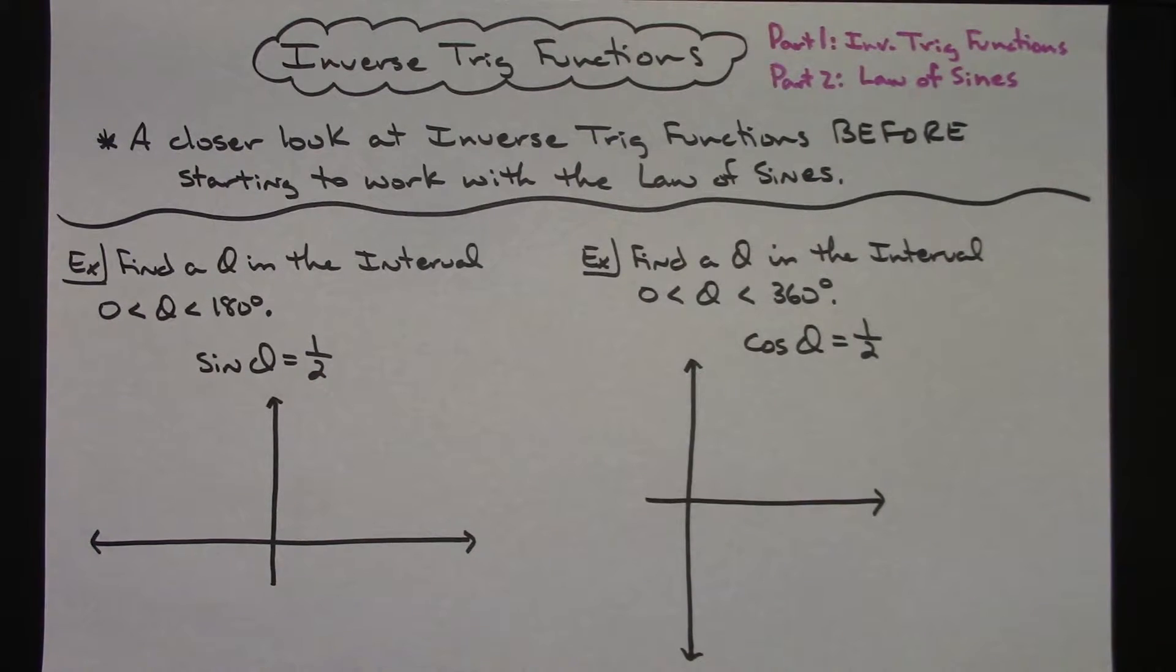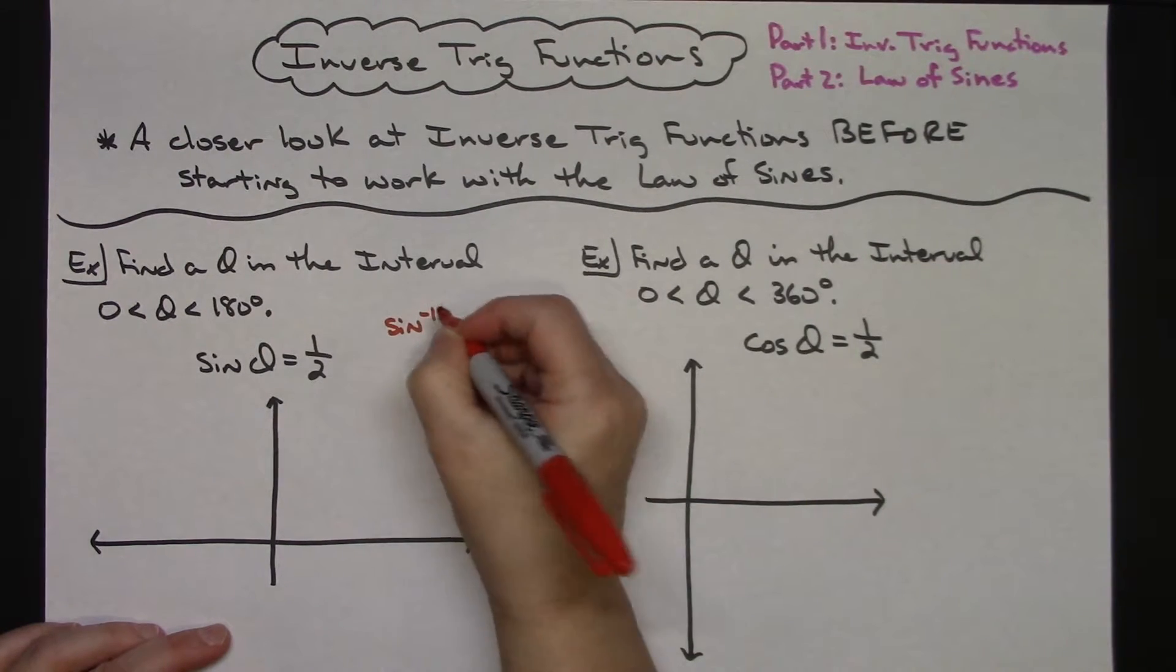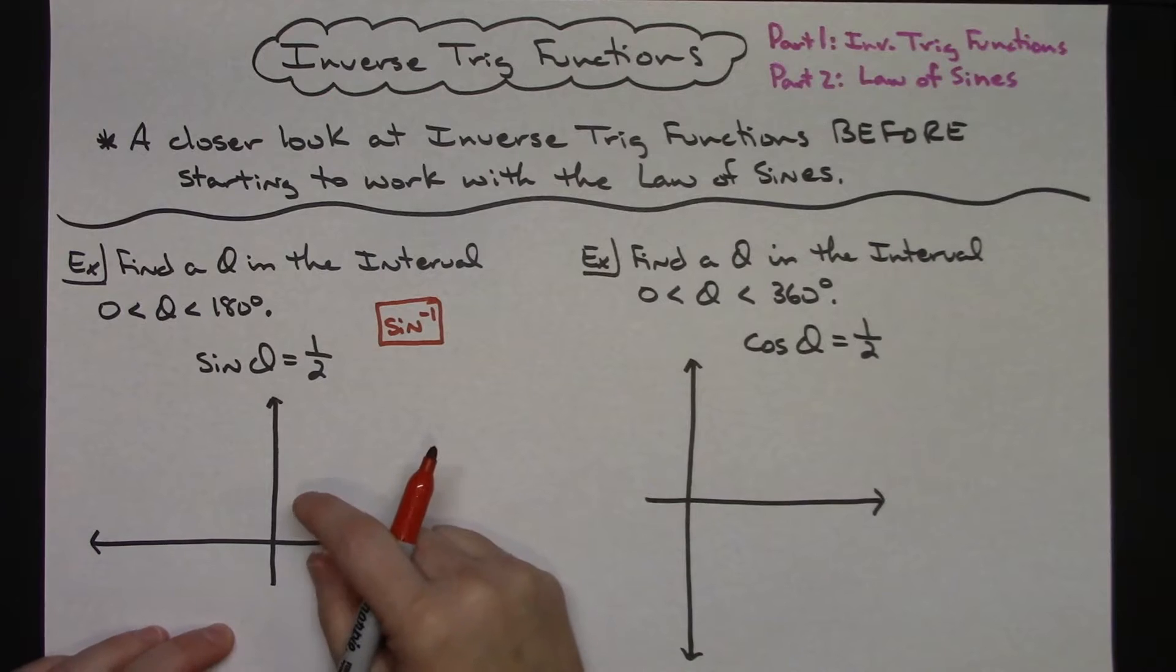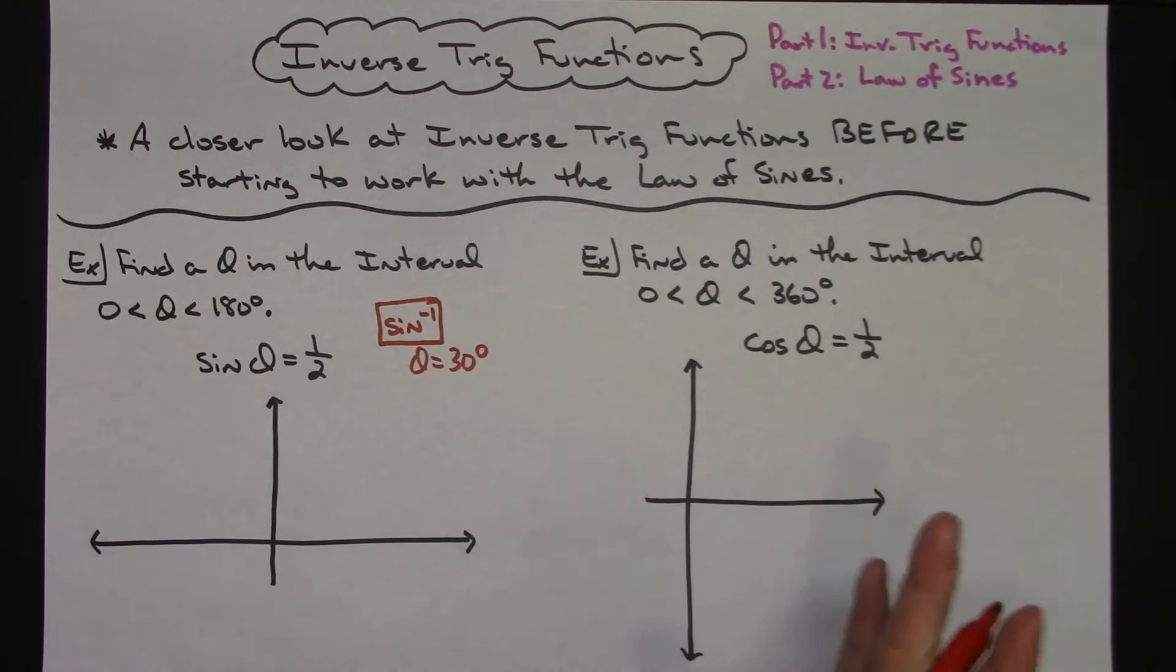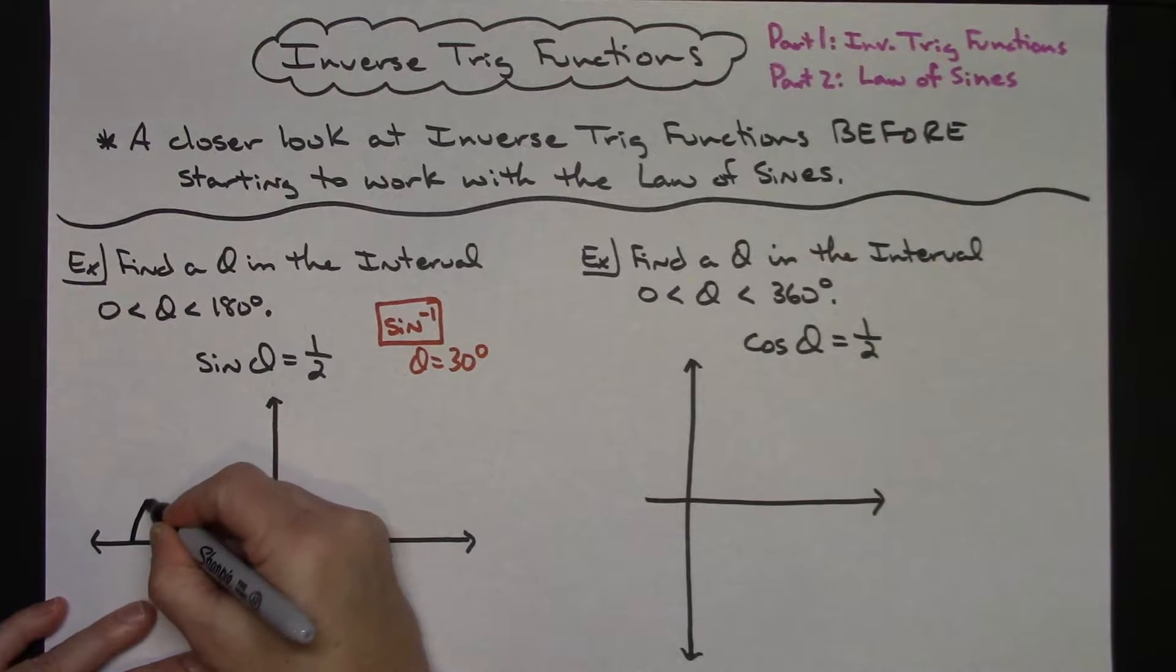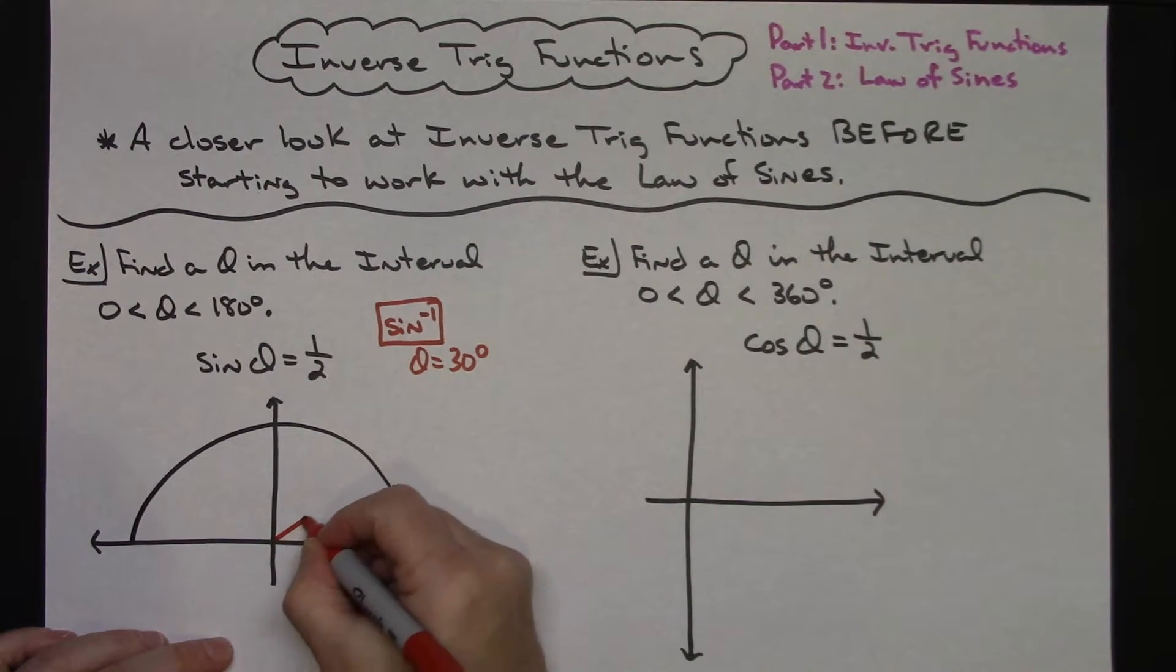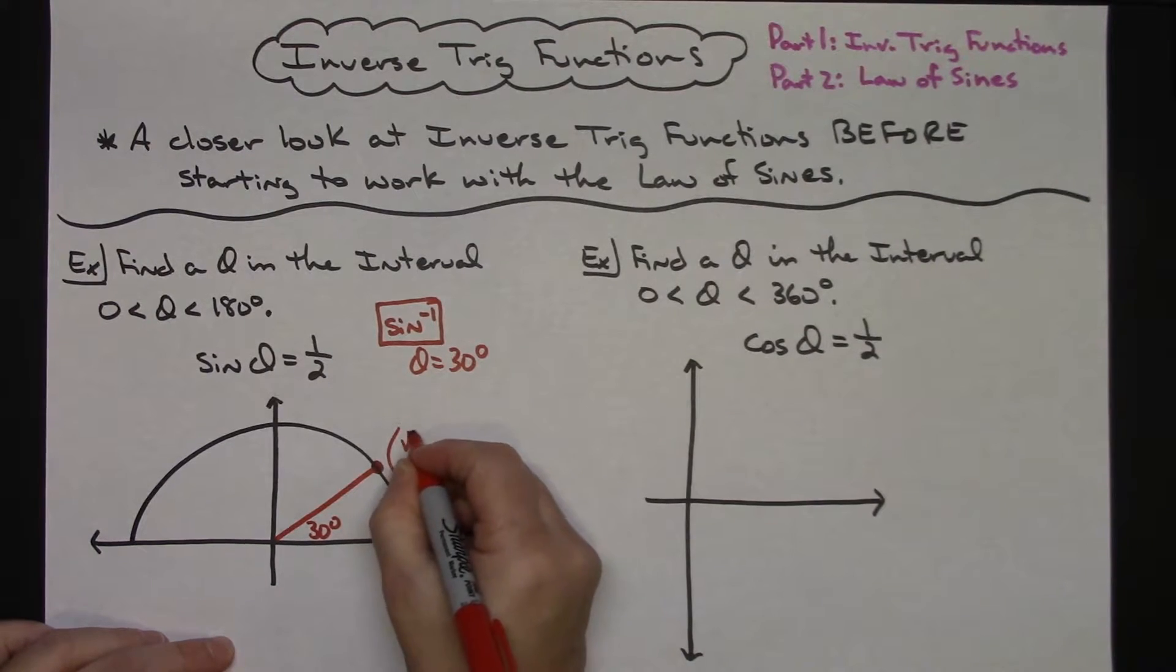The first thing people generally do is use the inverse sine button on their calculator - the sine with the little negative one, which is the inverse symbol. They plug that into their calculator and it returns a value of theta equaling 30 degrees, and that is correct. If I consider my interval from 0 to 180 degrees, basically a half circle here, at 30 degrees, which would be right here.